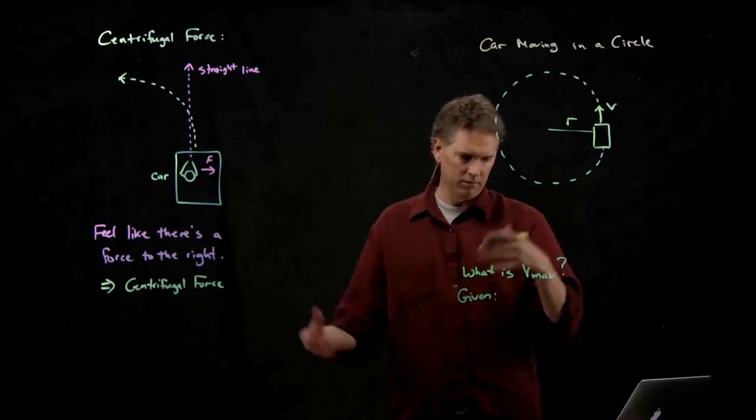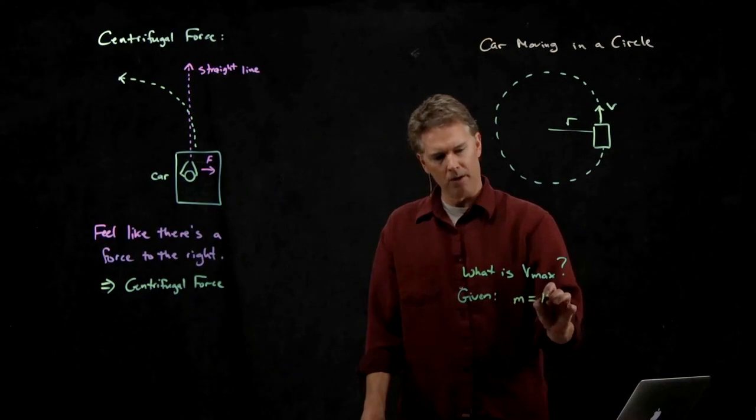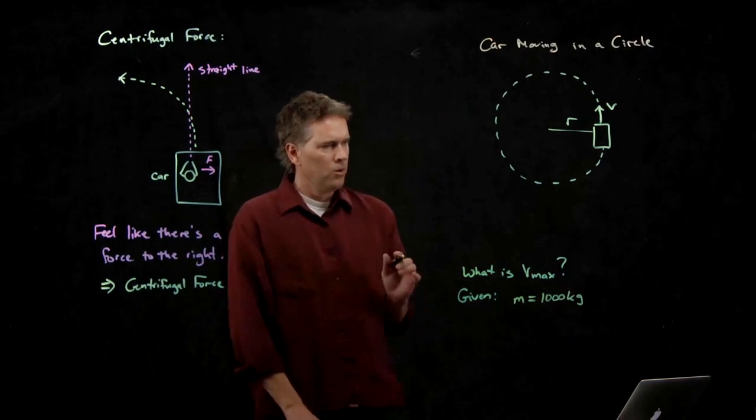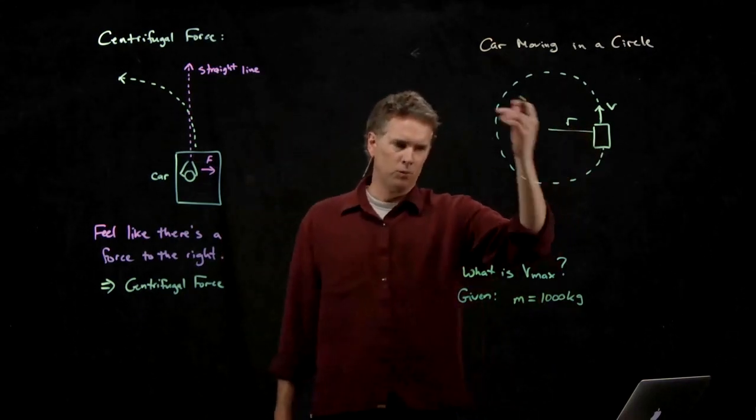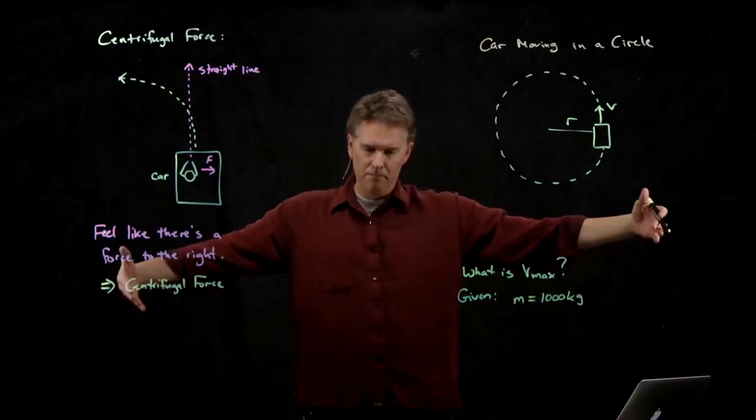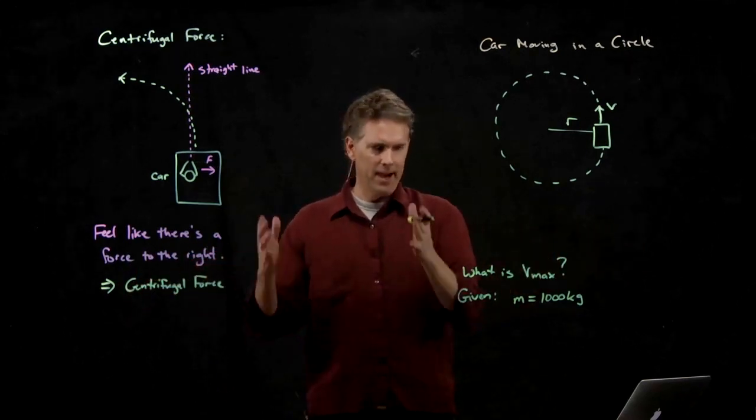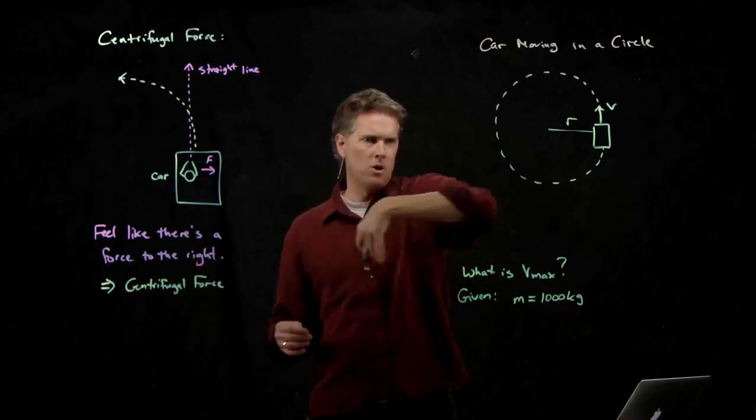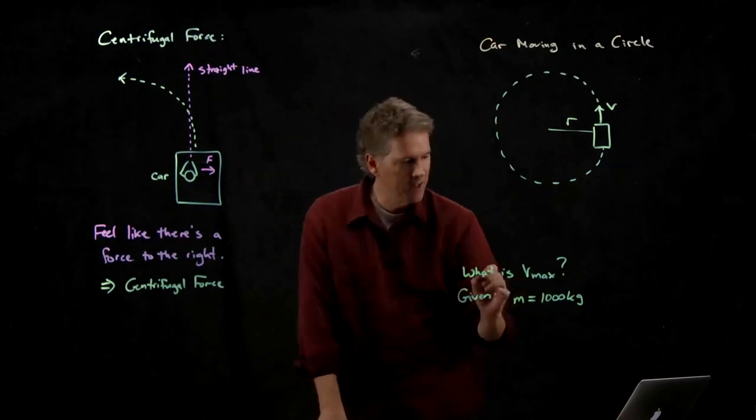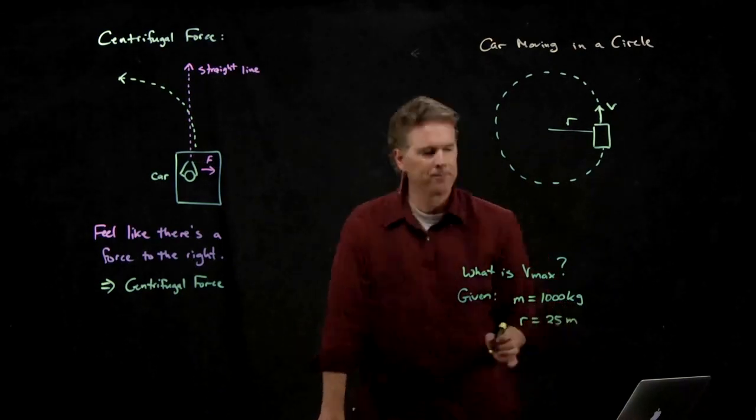A car is a couple thousand pounds if it's like a sports car, which is probably about a thousand kilograms. What's a typical radius of a turn? A football field is 100 meters roughly in diameter. So if we did half of that 50 meters in diameter, we could probably turn our car within the goal line to the 50 yard line. So let's say that r is 25 meters.